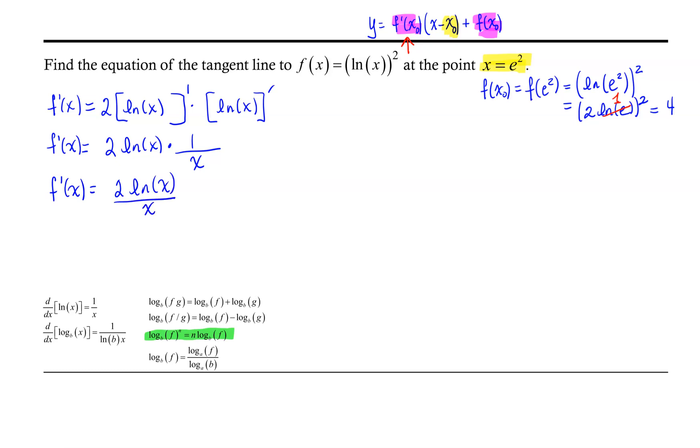Now with that derivative function, we can go ahead and find the slope of that tangent line. We need f'(e²), which equals 2·ln(e²) all over e².